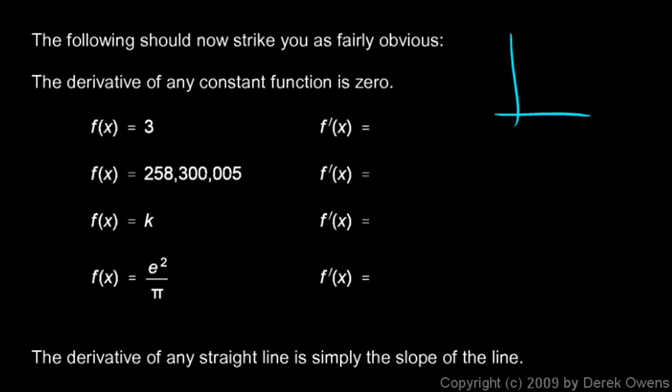Because any constant function, if we have x and here's our function, as long as the function is constant, as long as it doesn't change value, it's going to have a slope of 0 at every single point.